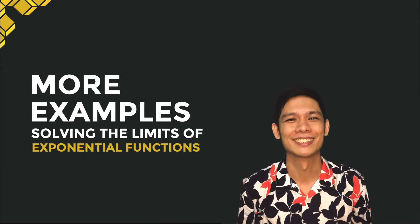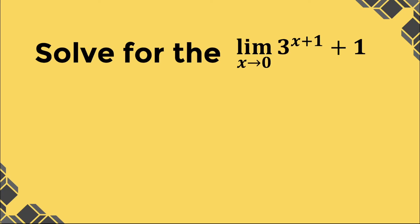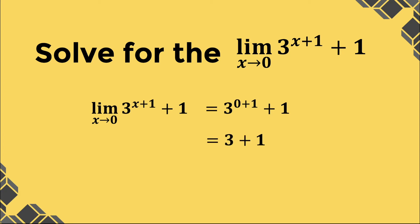Let's start. Let's have example number one. Let's solve for the limit of 3 raised to x plus 1, as x approaches 0 plus 1. Using direct substitution, we have 3 raised to 0 plus 1, plus the constant 1. Simplifying further, we have 3 plus 1, which is equal to 4. Thus, the limit is equal to 4.